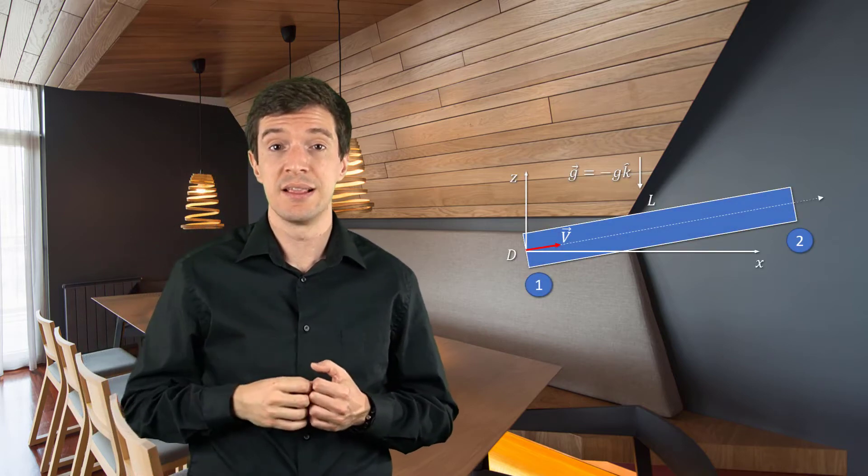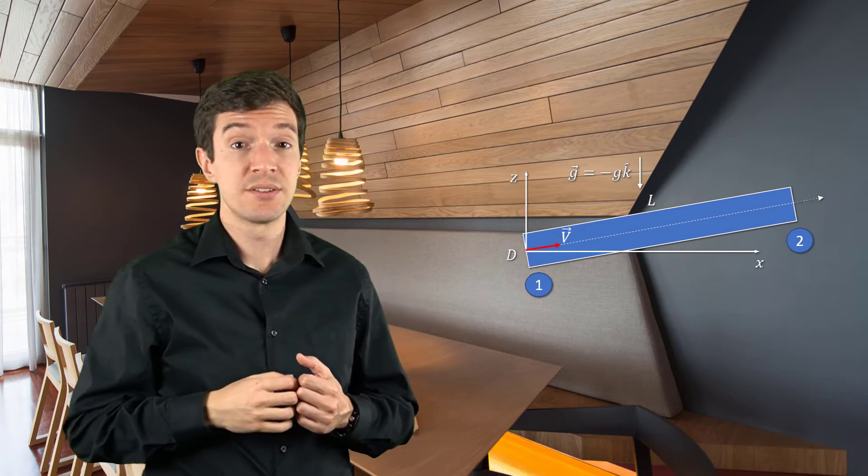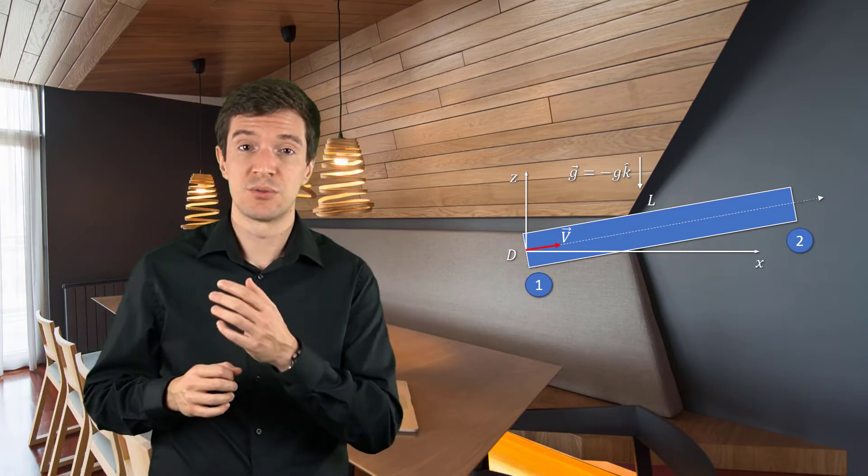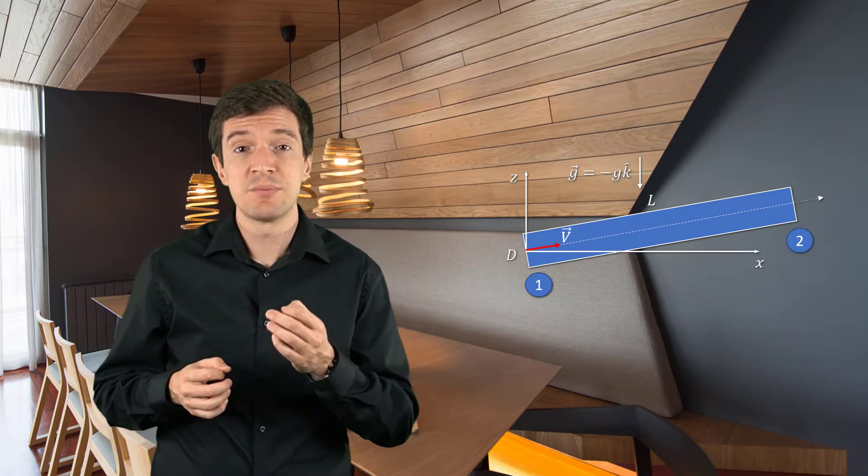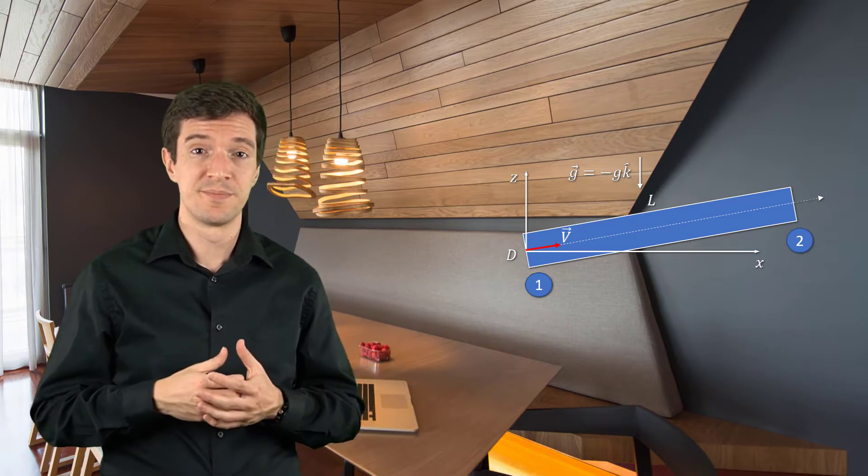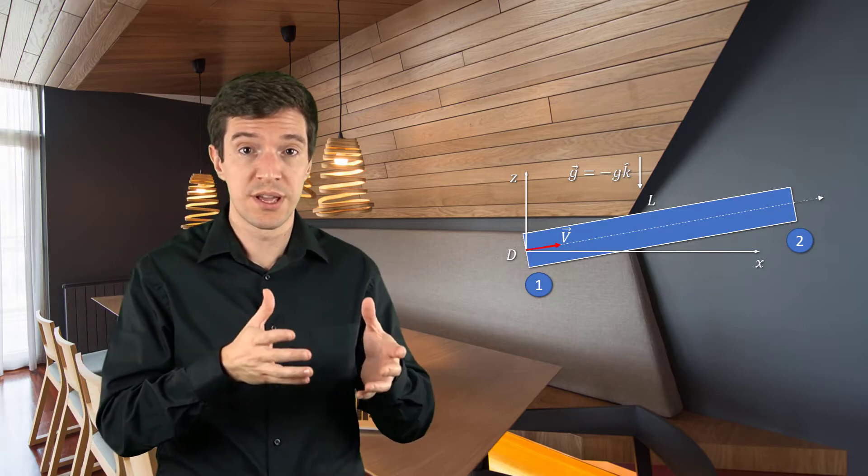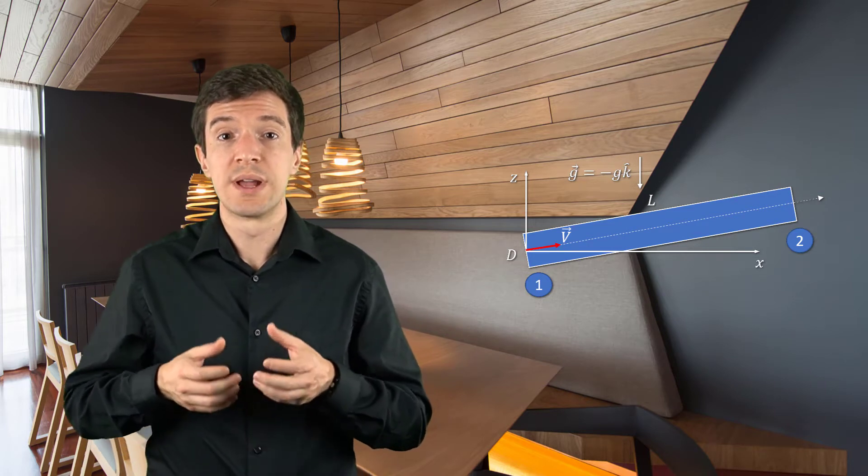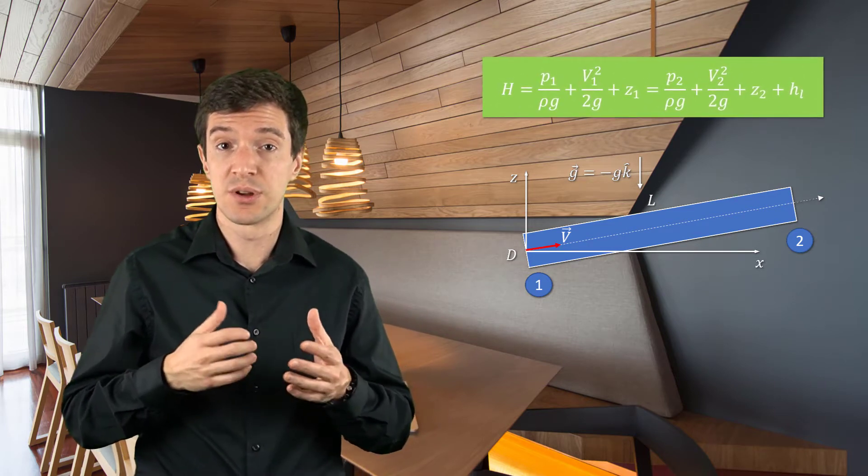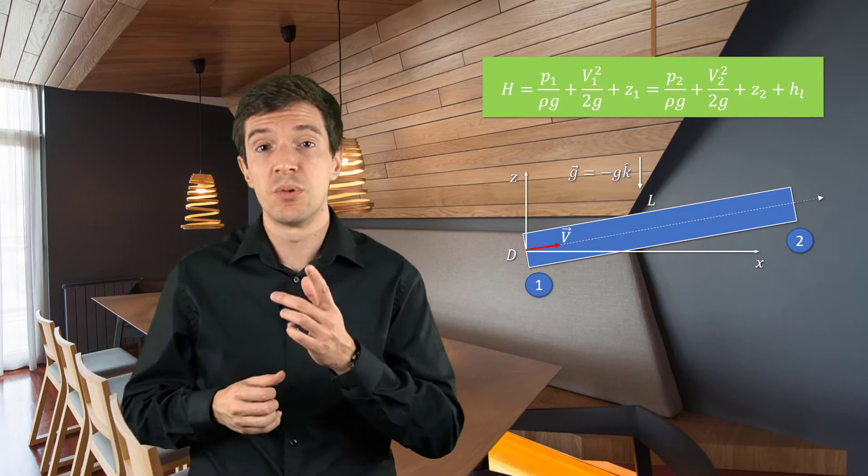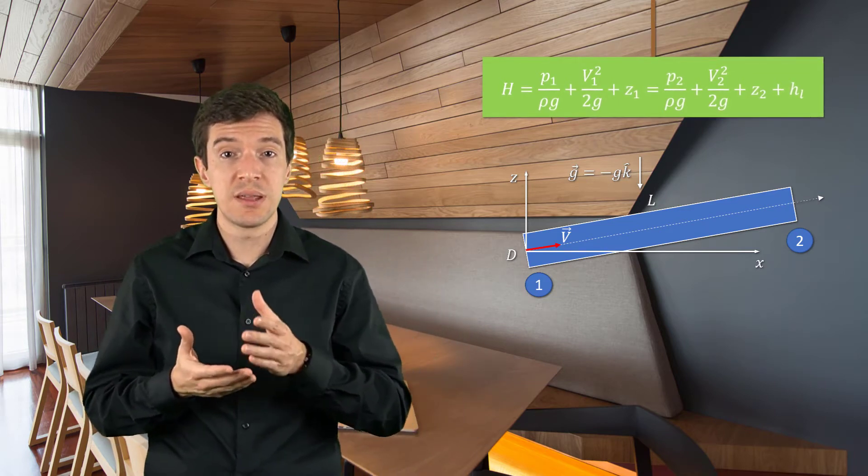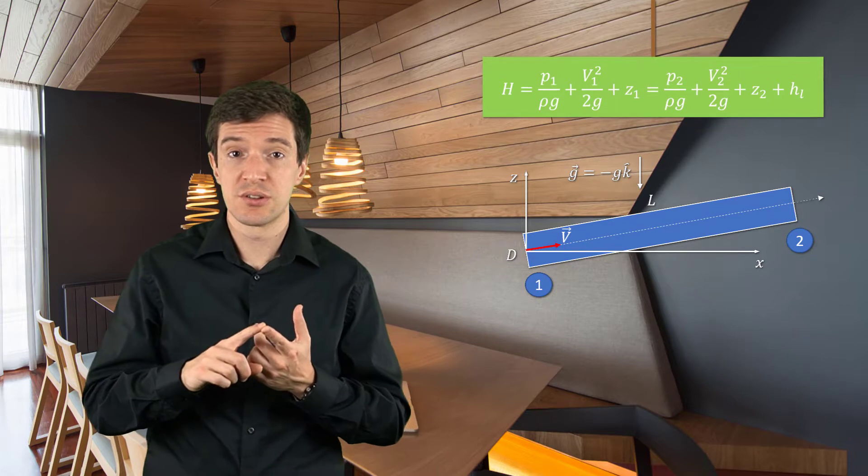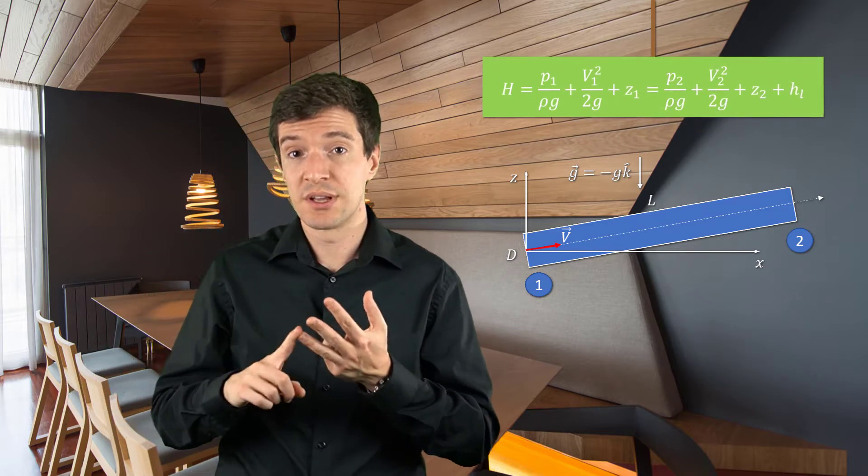Let's consider a generic case. We have an inclined pipe of length L and diameter D, with a fluid passing through it at a certain velocity and subject to a gravitational field. If we consider two different locations along the pipe, location 1 and location 2, we can describe the hydraulic head at the two locations. For both locations, we have the three main terms: the pressure term, the kinetic term and the potential term.